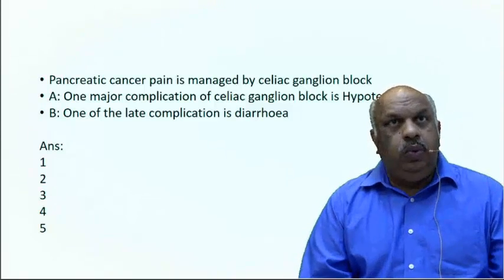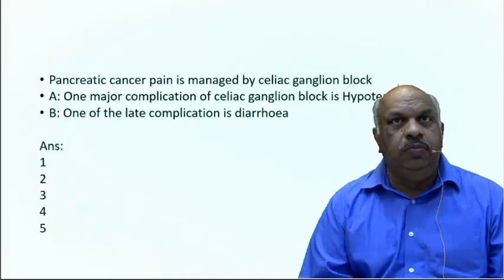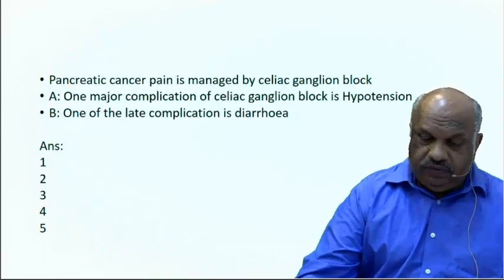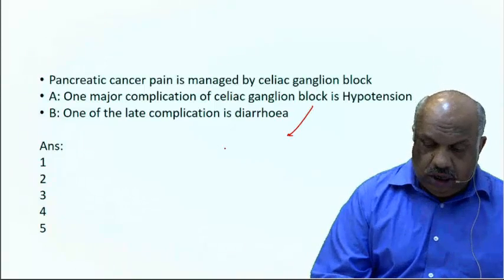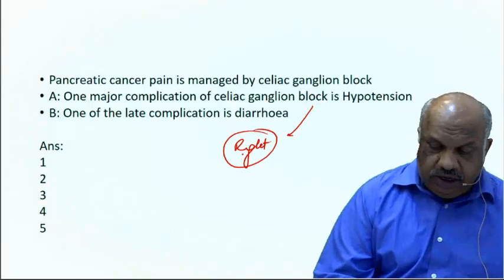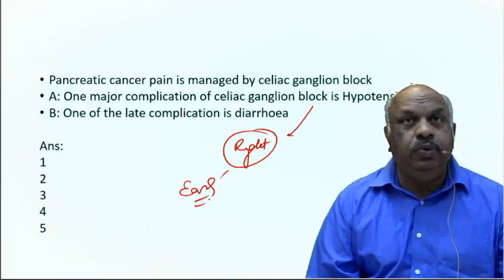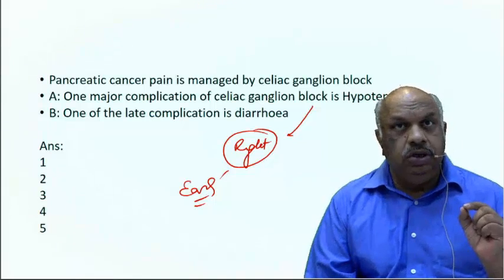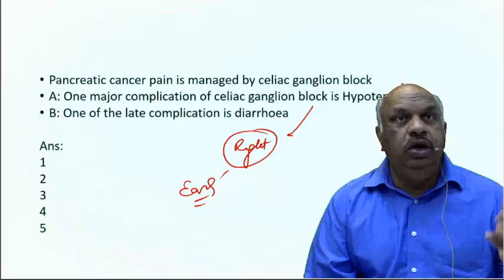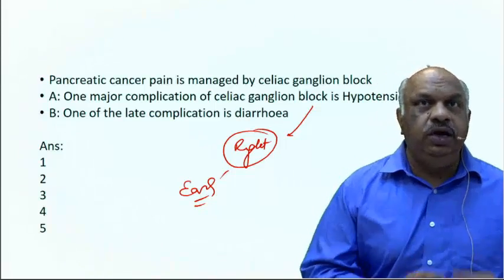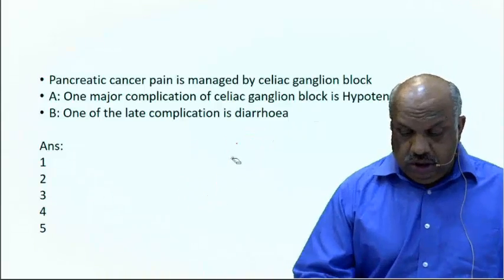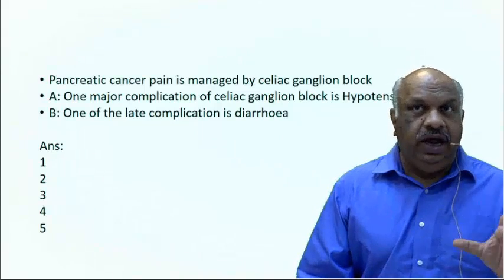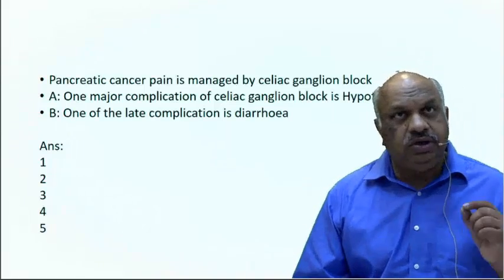Assertion A: one major complication of celiac ganglion block is hypotension. This is correct. It is an early complication — hypotension occurs due to sympathetic block, which causes vasodilation. The bowel and mesentery vessels undergo dilatation, lose their tone, and blood accumulates there, causing the patient to develop hypotension due to loss of sympathetic tone.